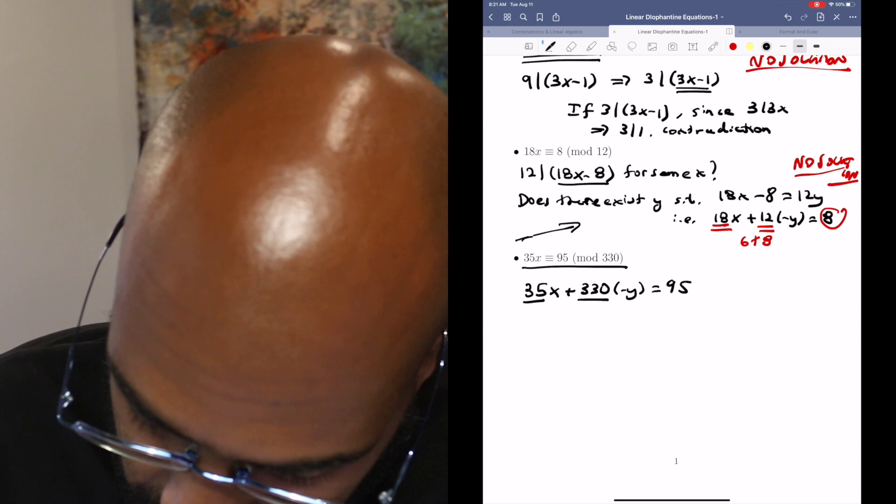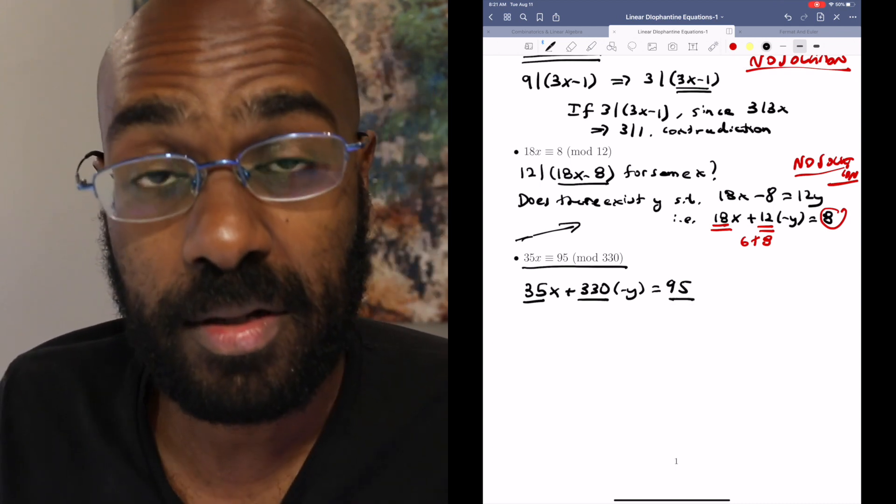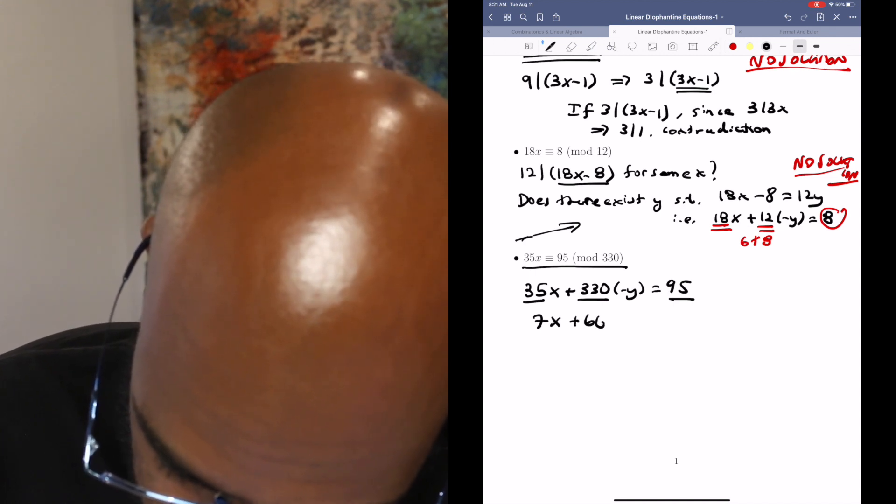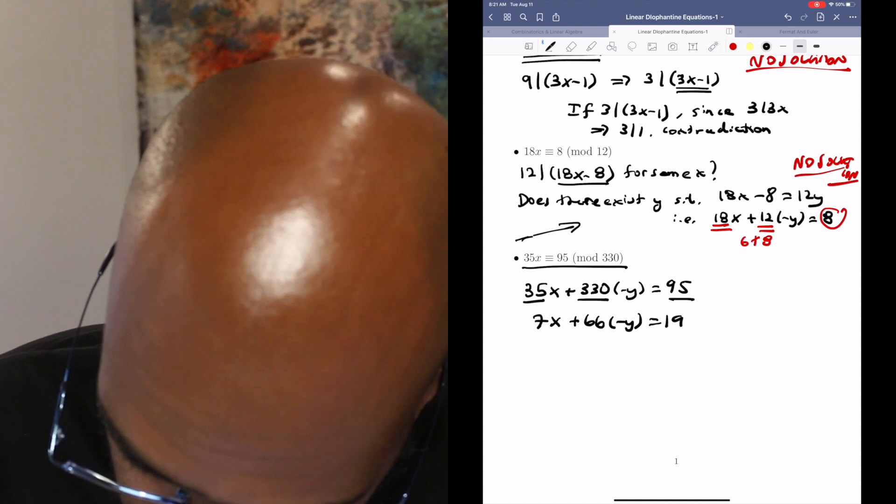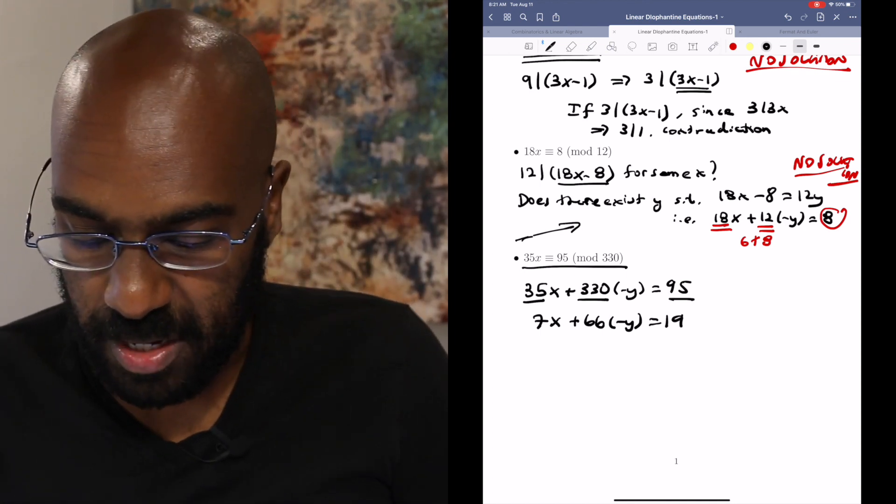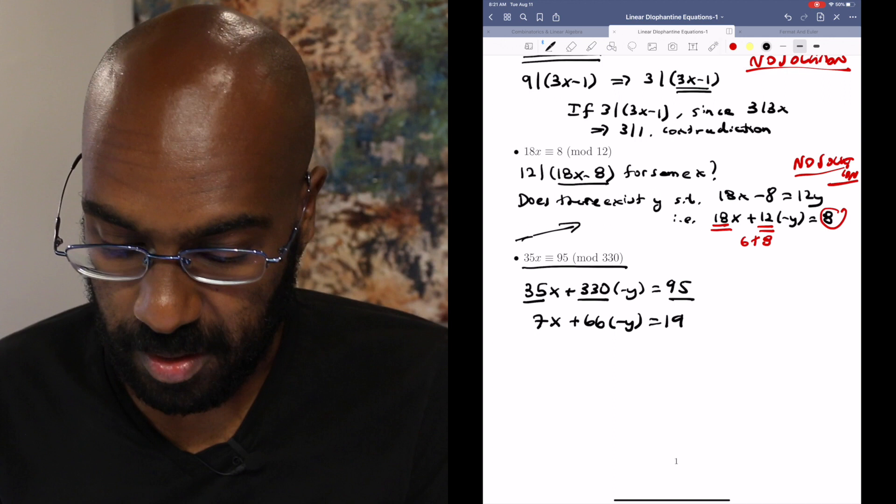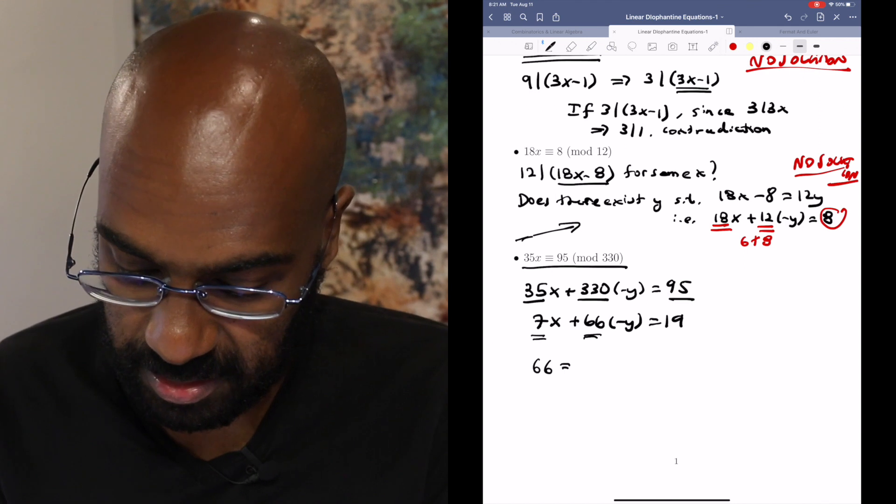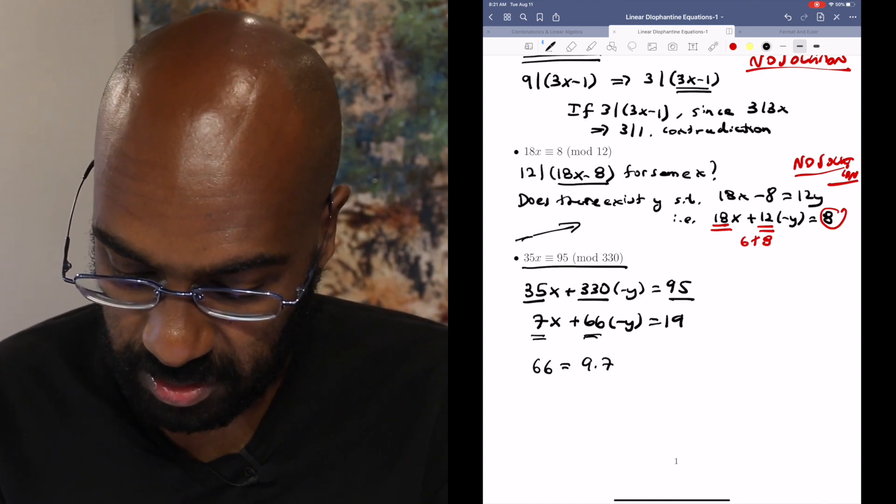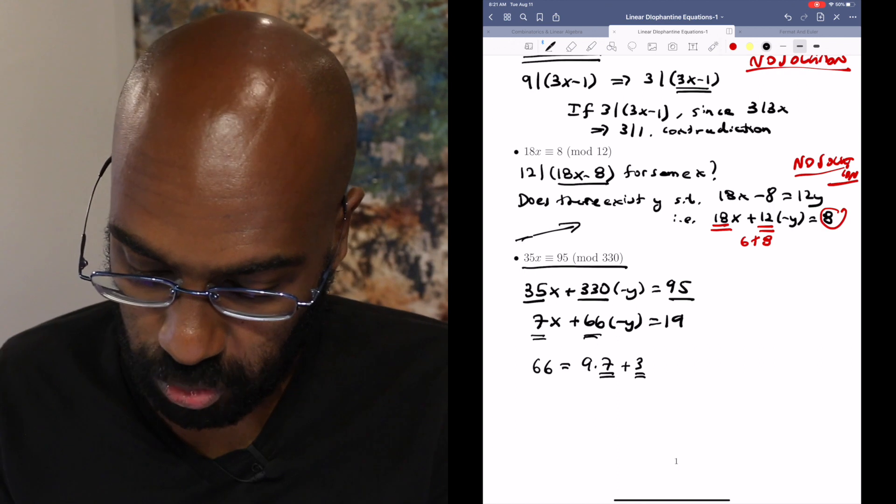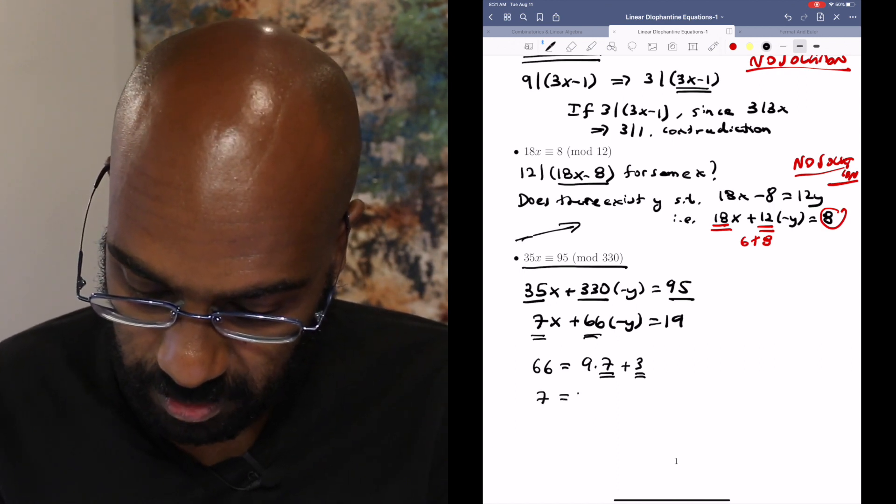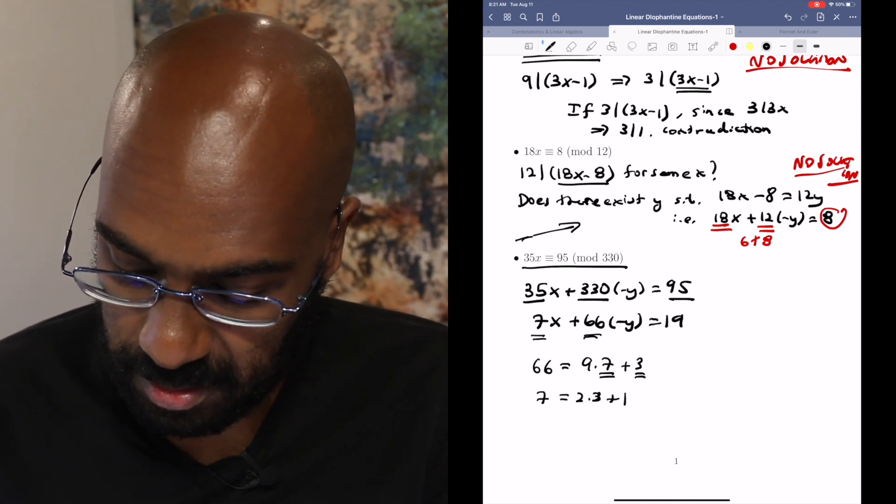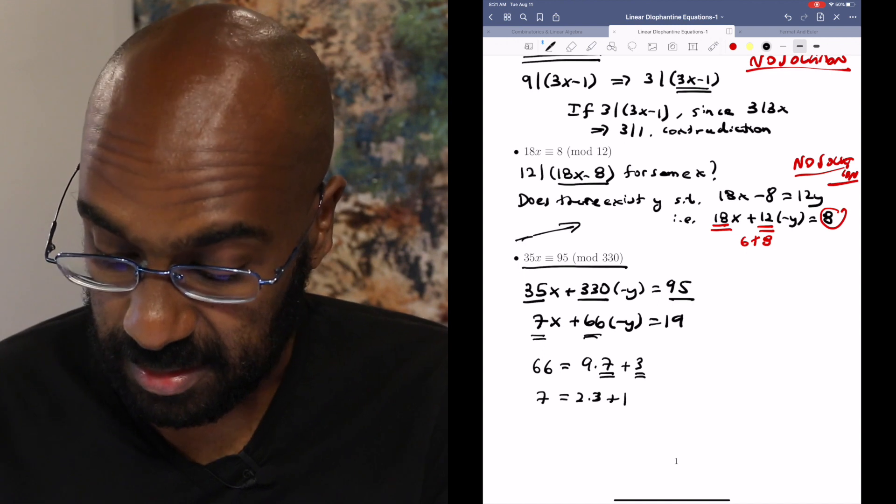So we notice that all of these factors here have 5 as a factor, so I'll divide by 5. We got 7x plus 66 times negative y is 19. So we can find a solution to this by using the Euclidean algorithm and Bézout's Lemma. So we'll take these two numbers and run the Euclidean algorithm. So 66 is 9 times 7 which is 63 plus 3. So here's our quotient or remainder. And 7 is 2 times 3 plus 1. So we've ended our process. The GCD of 66 and 7 is 1.